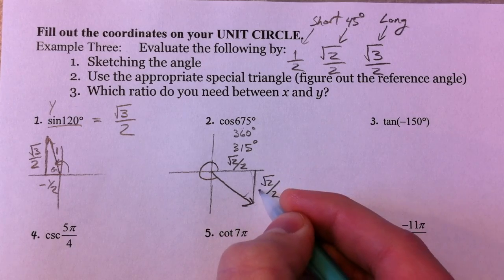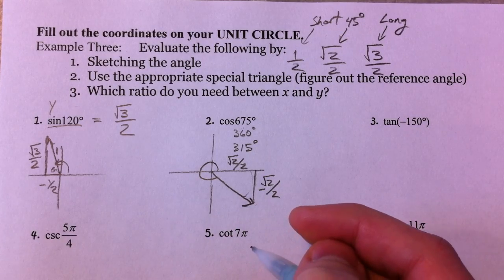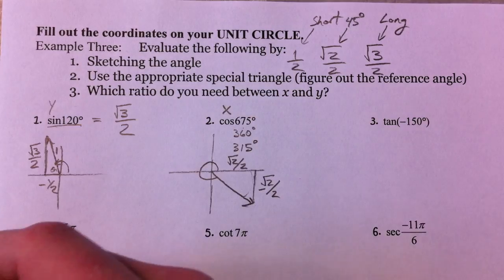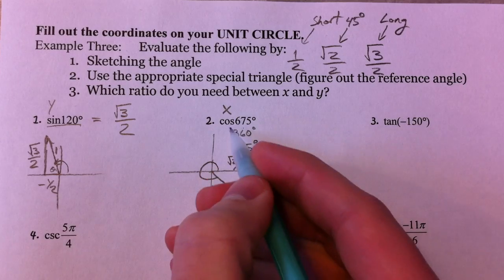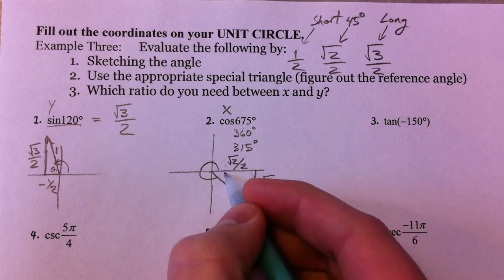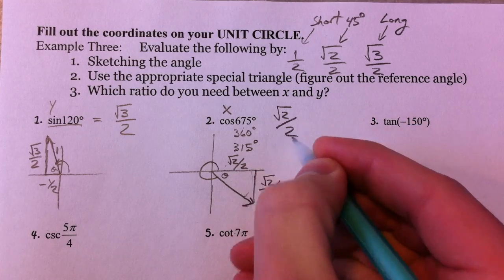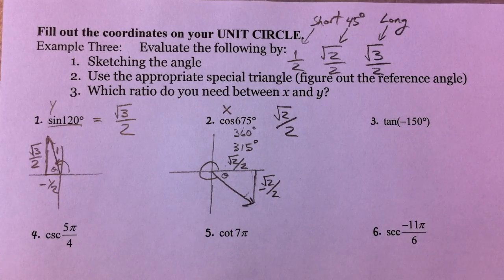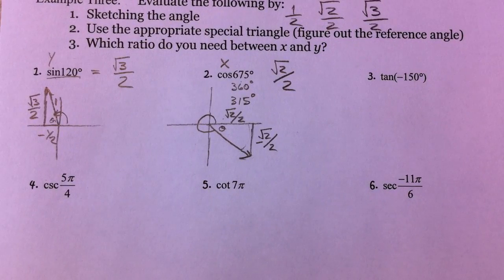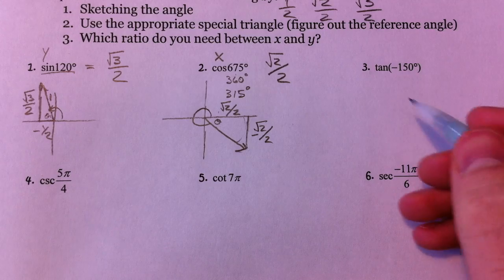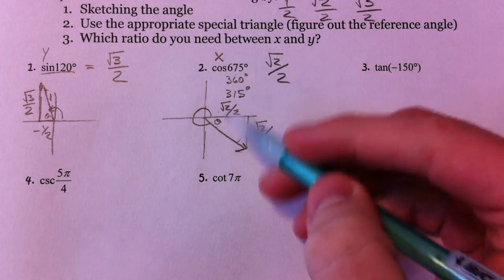Because we've gone down here, the y value is going to be negative. The cosine is the x value, and so dealing with the adjacent side, this is √2/2. Why don't you guys try the rest of these and then check your answer at the end to see how you did? Hit pause and try them out. Follow these instructions — same thing we've done.